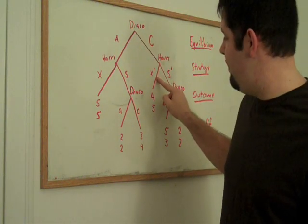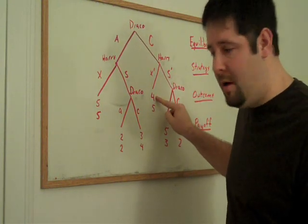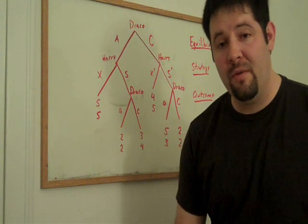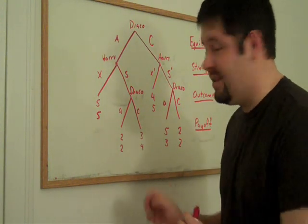Now, if it was C and then X prime, Draco would receive four and Harry would receive five. This is what's going to motivate our solution to the extensive form game.